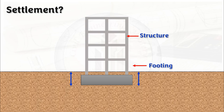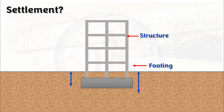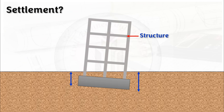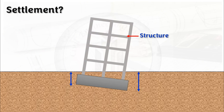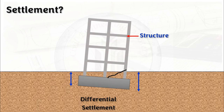Settlement can be equal all along the building, or differential, where one part of the building settles more compared to the other part. Equal settlement does not create much problem if it does not exceed the limit. In differential settlement, one part of the building settles less and another part settles more, creating tilting of the structure and even structural cracks. This is called differential settlement.